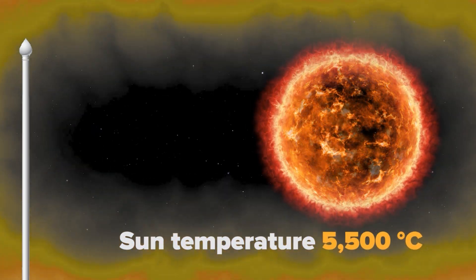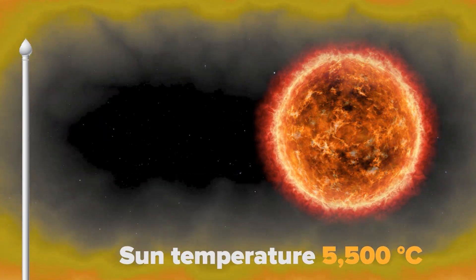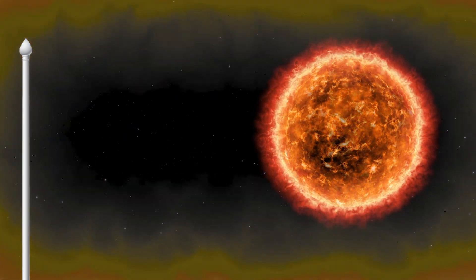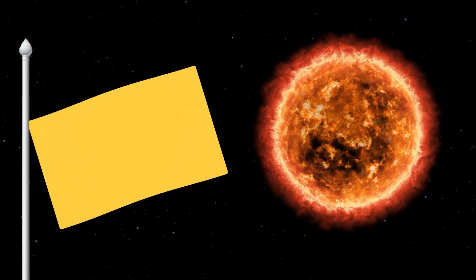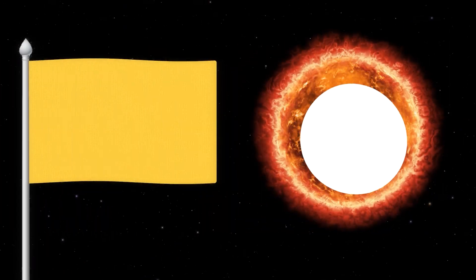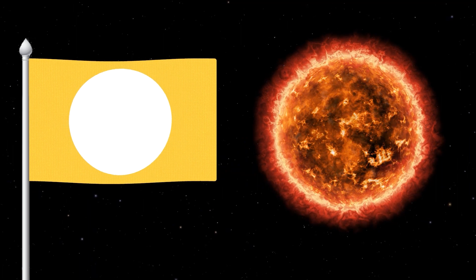Did you know that the surface of the Sun is a temperature of about 5500 degrees and its core is 15 million degrees hot? Let's make the flag yellow to show just how hot the Sun is. And in the center of the flag itself let's put a white circle that represents the core of the Sun.